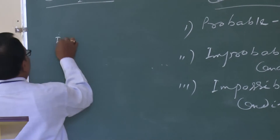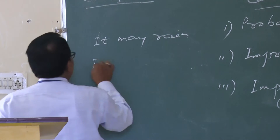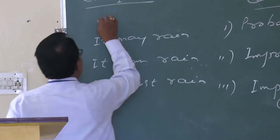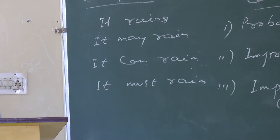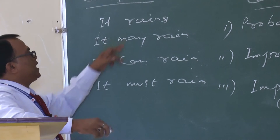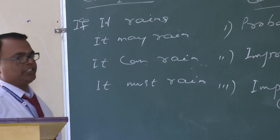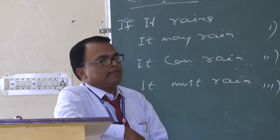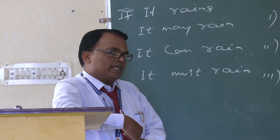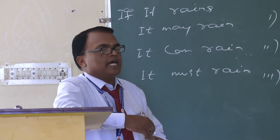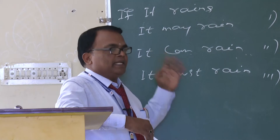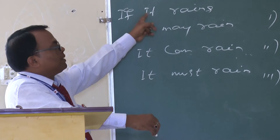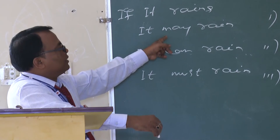For example: it may rain, it can rain, it must rain, it rains. If it rains — that is an open condition, zero condition. Examples: If it rains, I shall not go to school. If it rains, my birthday party will be cancelled. If it rains, our examination can be forfeited. If it rains, I will dance in the rain. These are open conditions — probable.